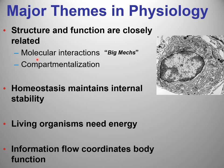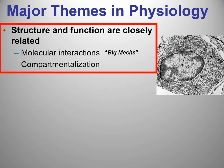Structure and function are very closely related — you can use structure to gain insight into function. If you've taken 305 or anatomy, you might have inferred function based on structure: the articulations and joints, shapes of bones, density of bones. For our purposes, we're going to talk about what I call big mechs — big mechanisms presented step-by-step — including compartmentalization, because the function inside the ER, mitochondria, or Golgi is very different, and compartments in eukaryotic cells are vital for proper regulation.